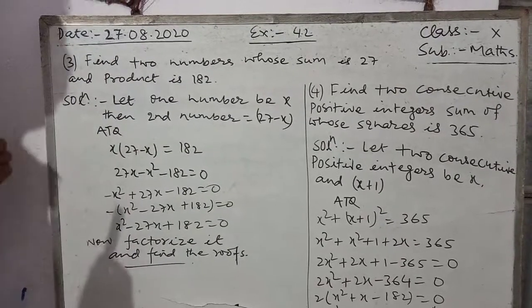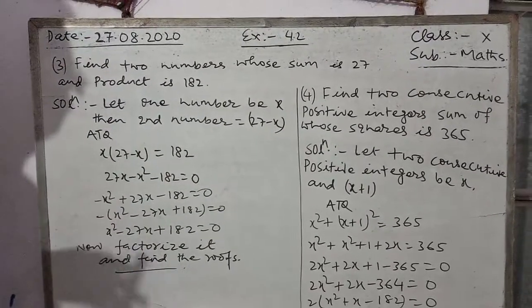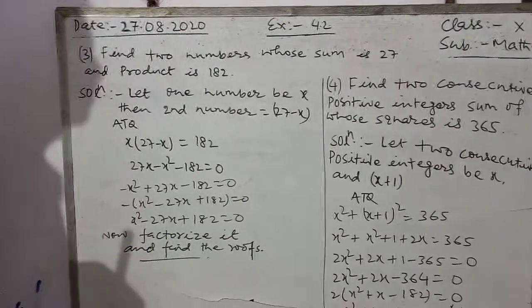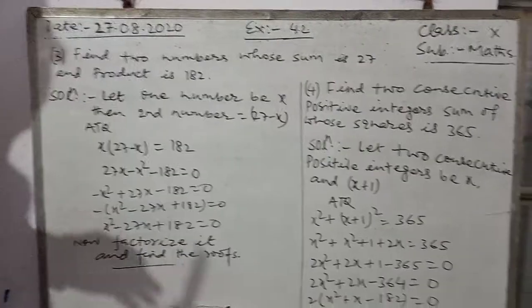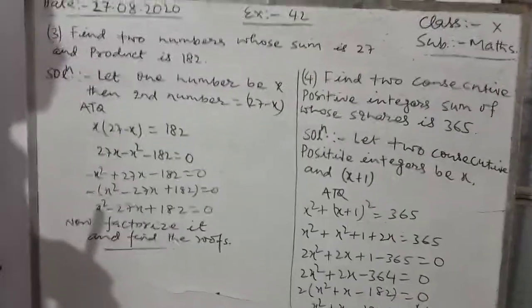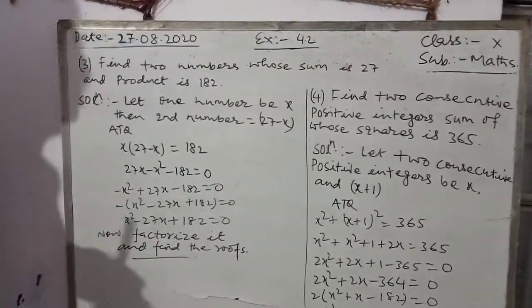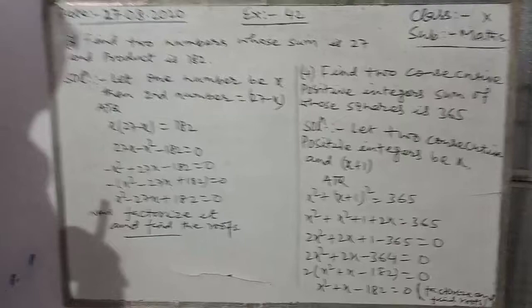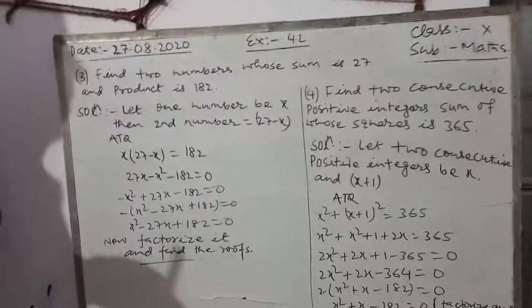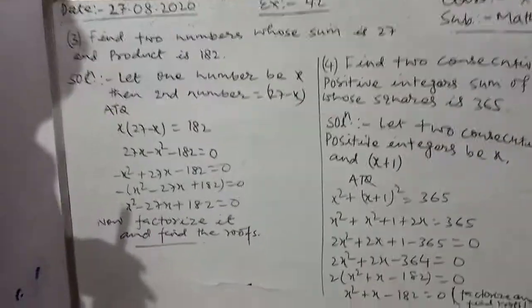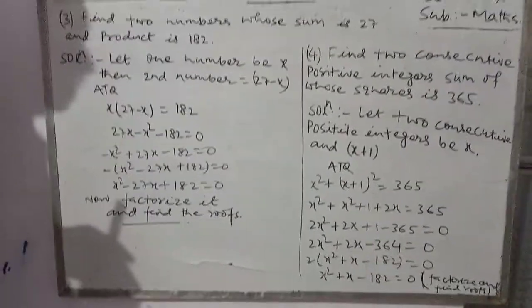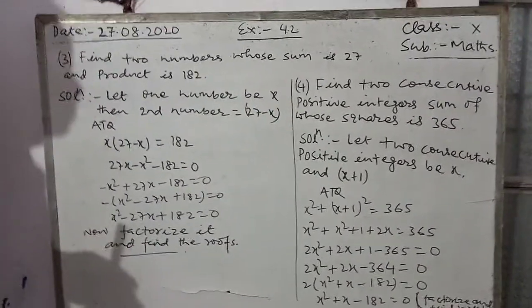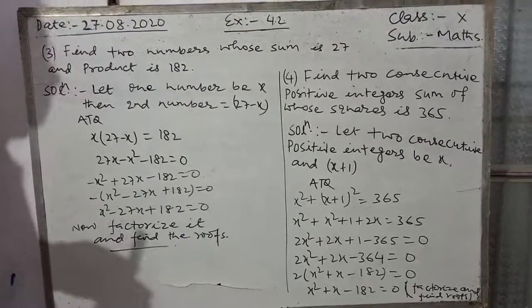The next question is Question 4: Find two consecutive positive integers whose sum of squares is 365.